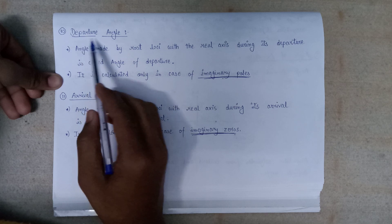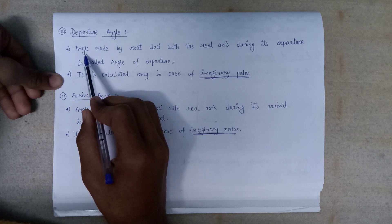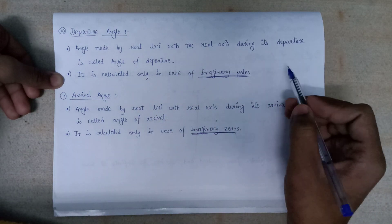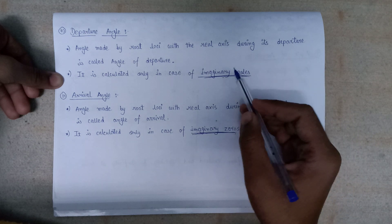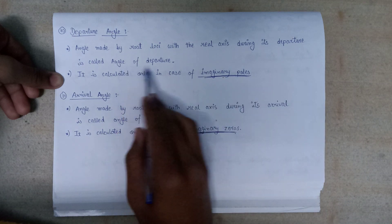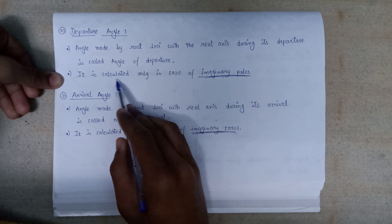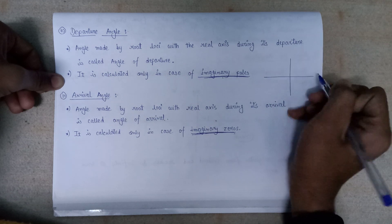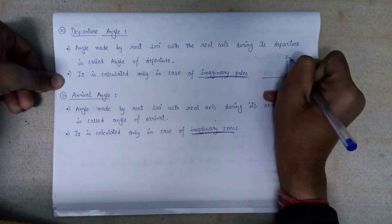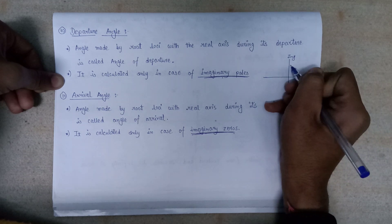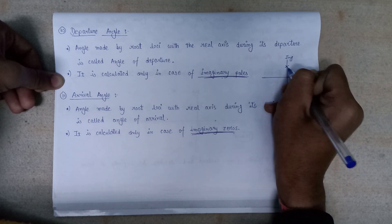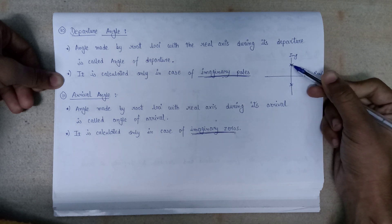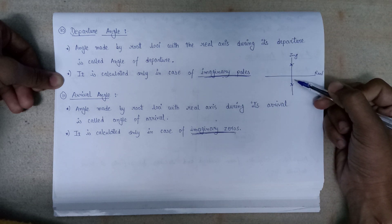Point ten is the departure angle — the angle made by the root locus with the real axis during its departure from the real axis. The departure angle concept is only applicable when imaginary poles exist, that is, when poles lie on the imaginary axis of the S-plane.